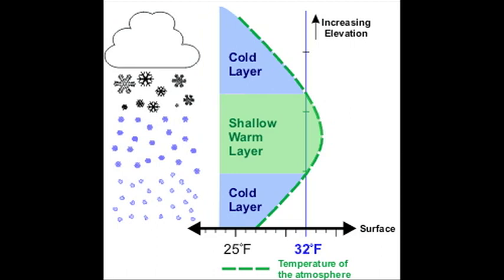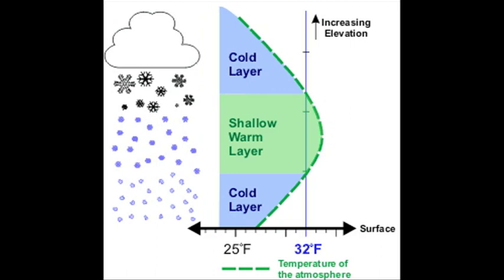For the formation of sleet, ice particles fall into a shallow layer of above-freezing temperatures that allow the particles to melt. This liquid rain then falls into a freezing layer above the surface that allows the rain to re-freeze back into an ice particle before reaching the ground.